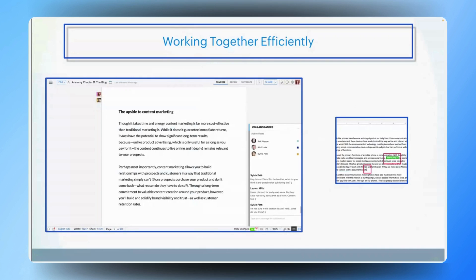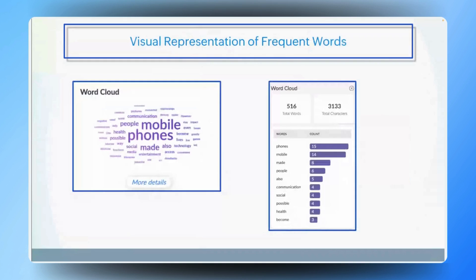Moving on — maintaining engaging and fresh content is crucial for marketing teams. Repetitive wording can make writing feel monotonous and uninspired. Does Zoho Writer offer any features to help avoid this and keep the content vibrant? Absolutely Balaji. Zoho Writer offers a powerful word cloud feature that highlights the most frequently used words, allowing you to quickly identify any overused terms. Beyond that, Writer provides a detailed list showcasing how many times you have used each word in the document.